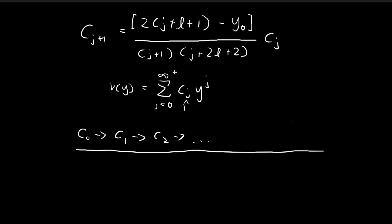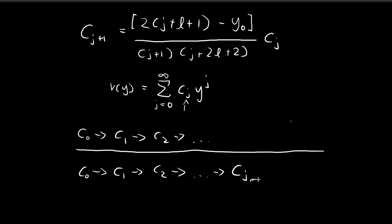That means the wave function will not be normalizable, and we know our wave function must be normalizable. So as we keep generating terms with this recursion formula, we must reach a certain point — let's call it c_{j_max} — where the next number generated is equal to zero.